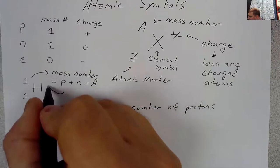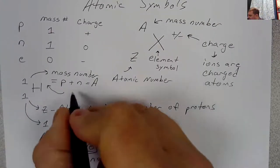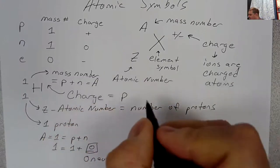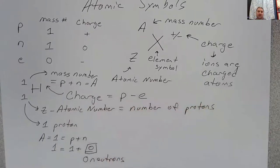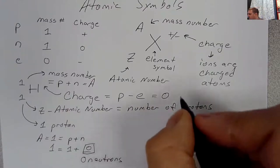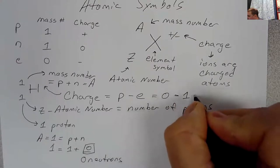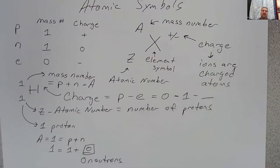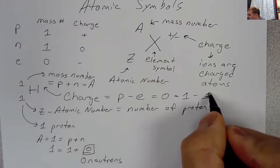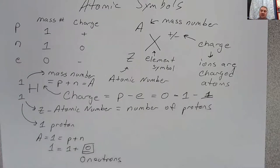There's no charge given here, and the charge is always equal to the number of protons minus the number of electrons. If the charge is zero and we have one proton, that means the atom must have one electron. For a neutral atom, you will always find that the number of electrons equals the number of protons.